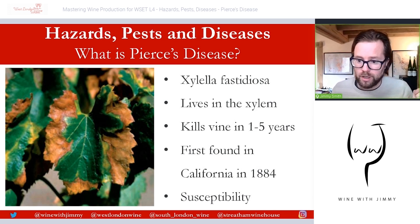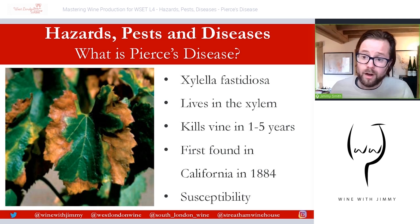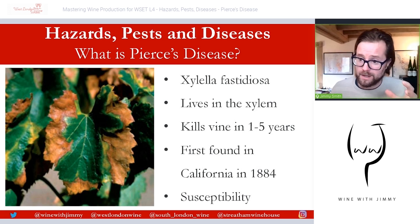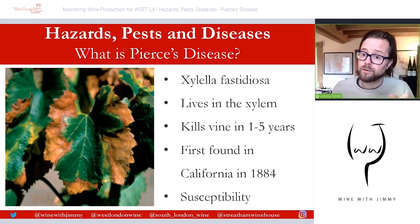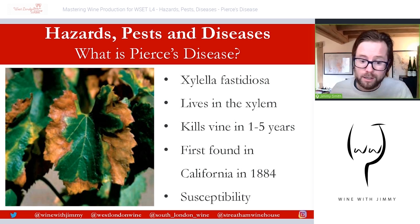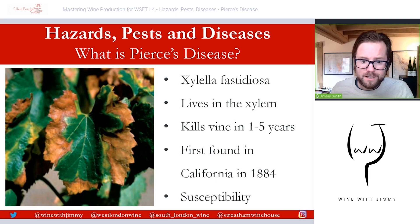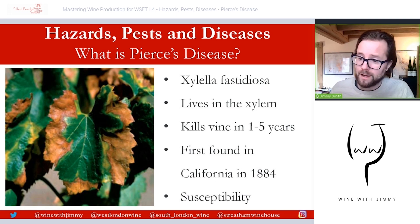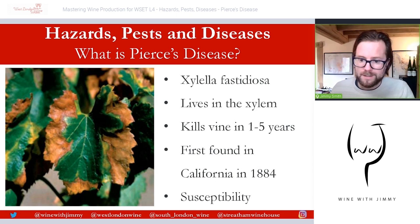The clogging of the xylem leads to shriveling and dropping of leaves, as seen in the picture, and eventual death of the vine within one to five years. The vine isn't getting its necessary nutrients and water supply due to the arteries essentially being clogged up.